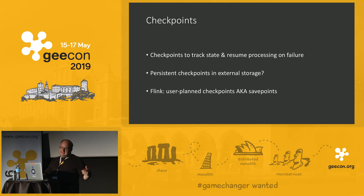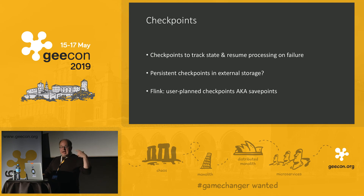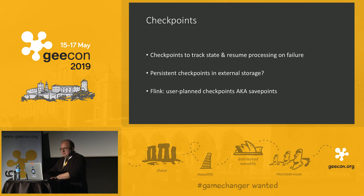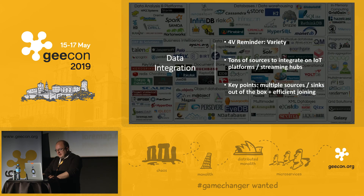A small kudos to Flink: it has a feature called save points, which I really enjoy. A user can define additional checkpoints on demand. For instance, if you need to update a Flink cluster version, you do an additional checkpoint, turn it off, update the version, turn it back on — and it resumes working in the new version but with the old data. Save points are also really useful for planned outages.